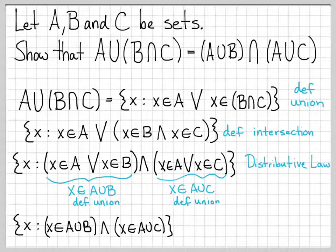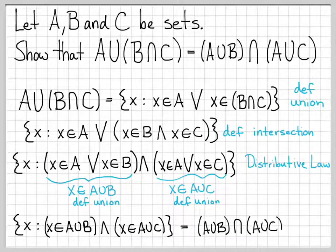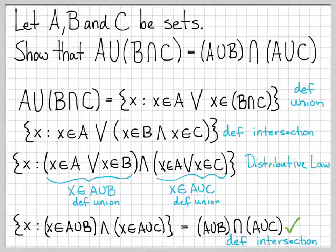Our starting set, A union B intersect C, is equal to the set X such that X is in A union B and X is in A union C. Again, I can now use the definition of intersection, and I can write this as the set A union B intersected with A union C by the definition of intersection. We replace basically the logical and there. If you are both in this set and in this set, that means that you are in the intersection. So we can use the definition of intersection to write this down as A union B intersected with A union C.